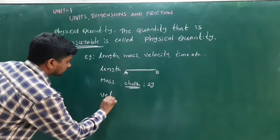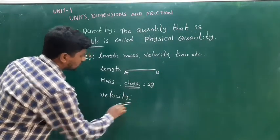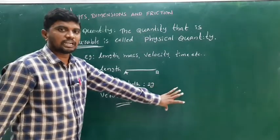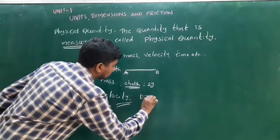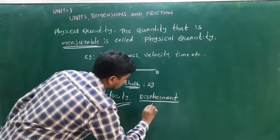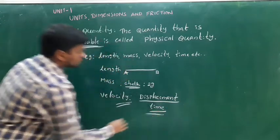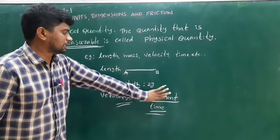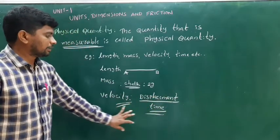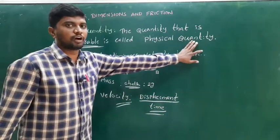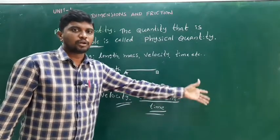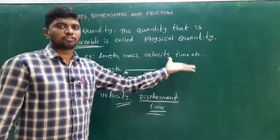Next one is velocity. The definition of velocity: change in displacement is called velocity, that is, displacement divided by time. Displacement is measurable and time is measurable, so velocity is a physical quantity. Next one is time — two seconds, one minute, two hours — time is measurable, so it is called a physical quantity.